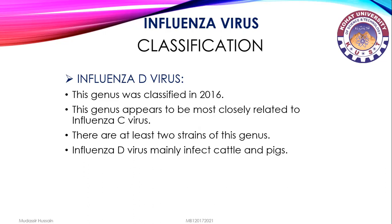Influenza D virus is a genus classified in 2016. It appears to be most closely related to influenza C virus. There are at least two strains of this genus. Influenza D virus mainly infects cattle and pigs.